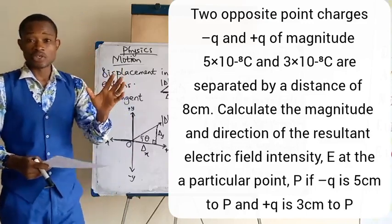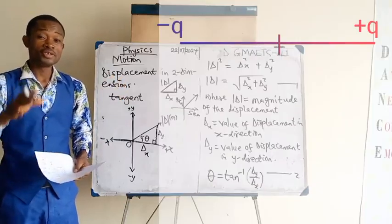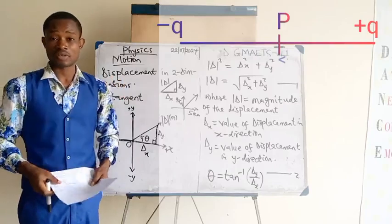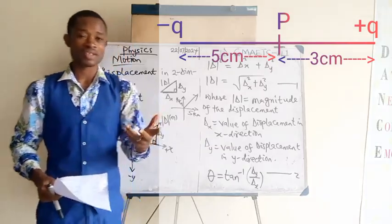If minus Q is 5 cm to P and plus Q is 3 cm to P. The diagram is displayed on the screen so you know where point P is. How do we solve this question?